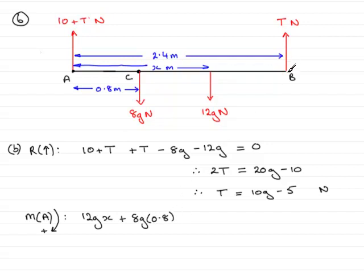Now we've got the force at B, T newtons, and that's going to want to turn the plank anticlockwise. So that's going to be in the negative sense for this particular part. So we've got T newtons times 2.4. And we know that T is 10G minus 5, so that's going to be minus 10G minus 5 multiplied by the 2.4.